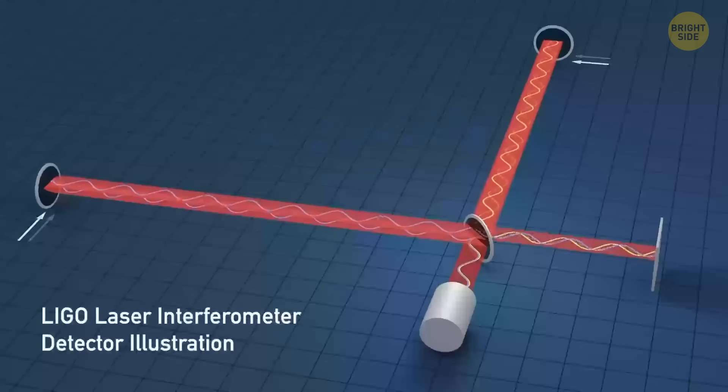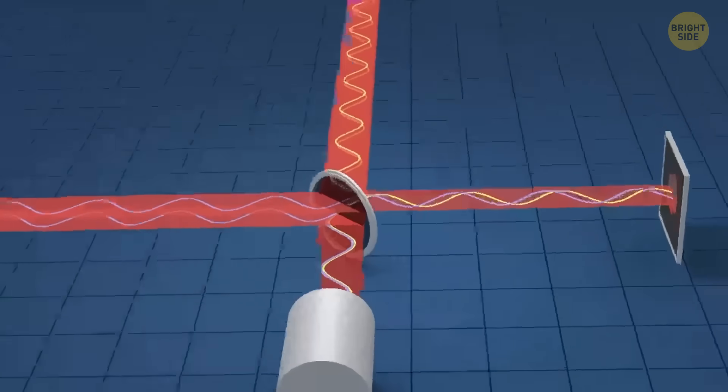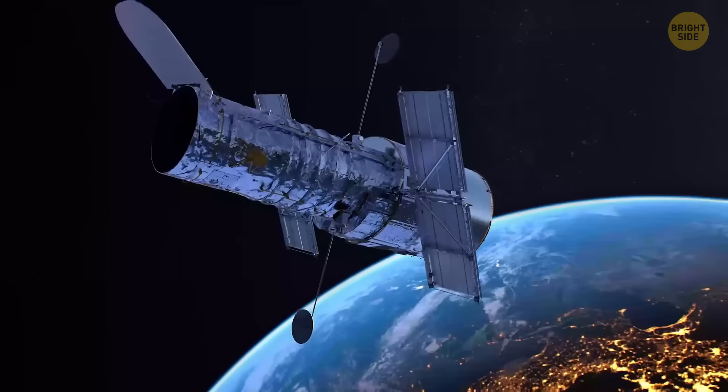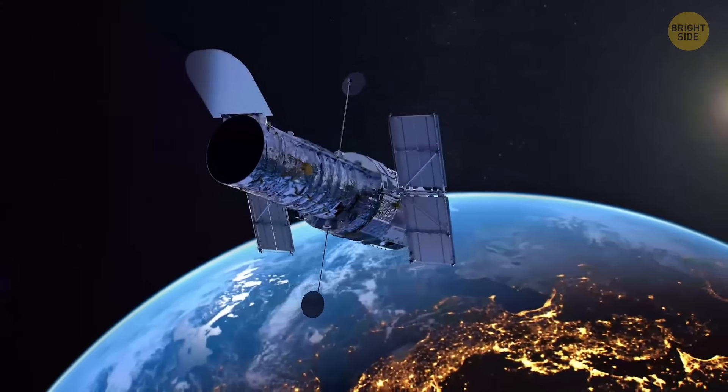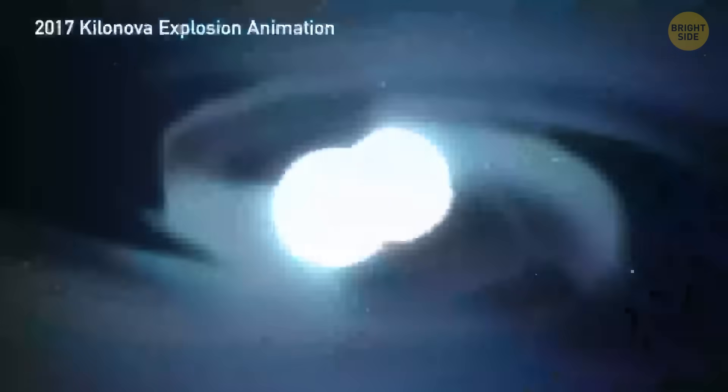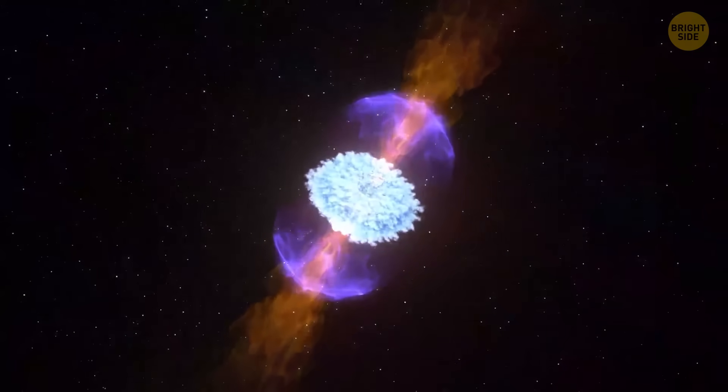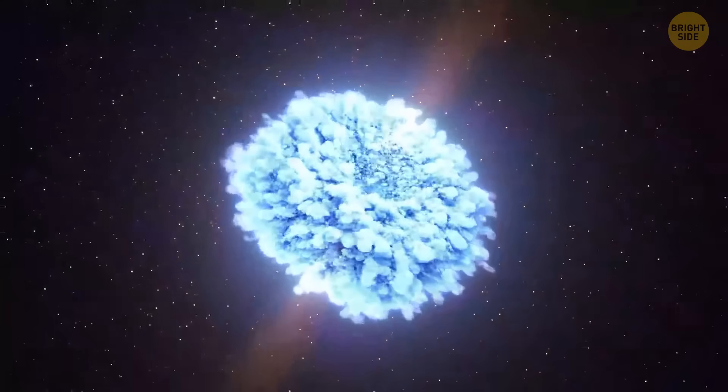The problem lies in the fact that our tools on Earth, like LIGO, which stands for Laser Interferometer Gravitational Wave Observatory, only catch a tiny moment of these black holes crashing together — literally just a split second. That makes it tough to figure out where those medium-sized black holes come from. So scientists have a new plan.